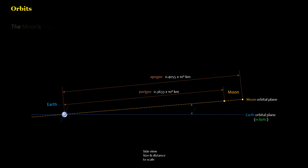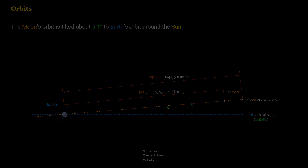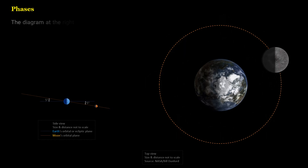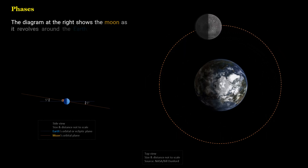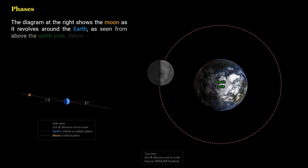The moon's orbit is tilted about 5.1 degrees to Earth's orbit around the Sun. The diagram at the right shows the moon as it revolves around the Earth, as seen from above the North Pole. Below is the side view.